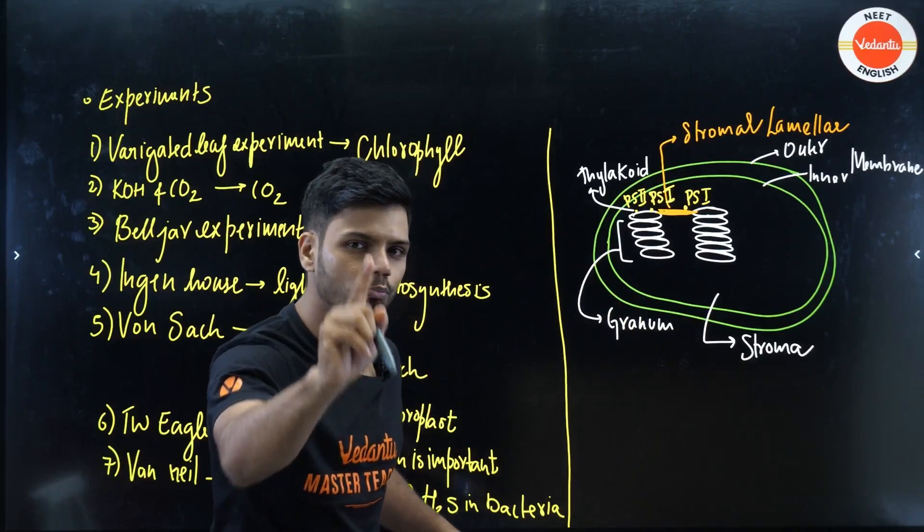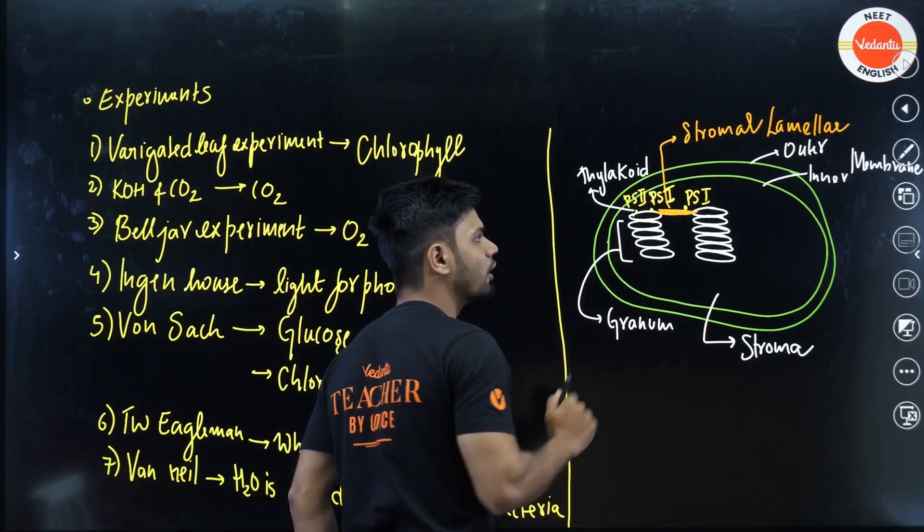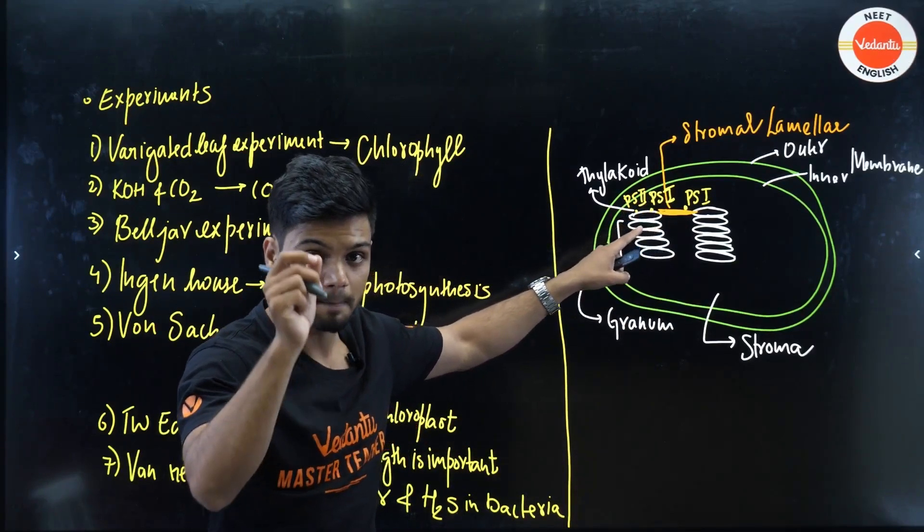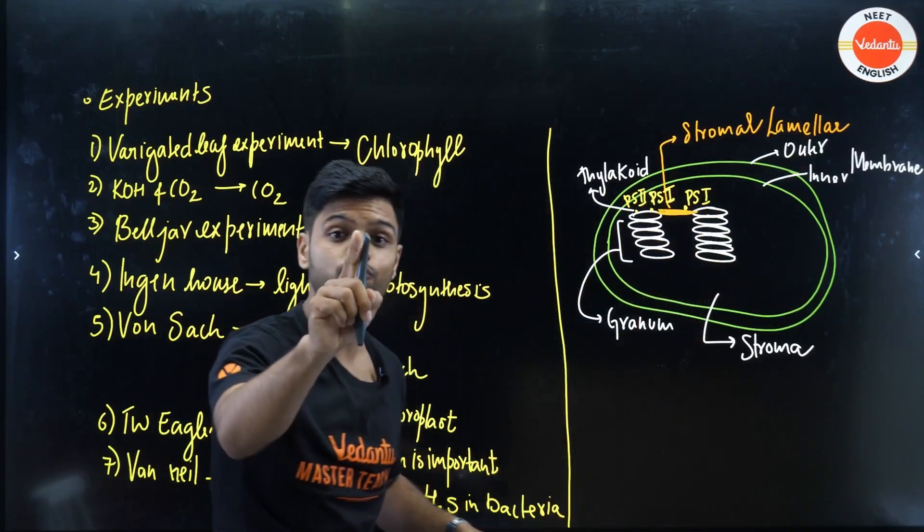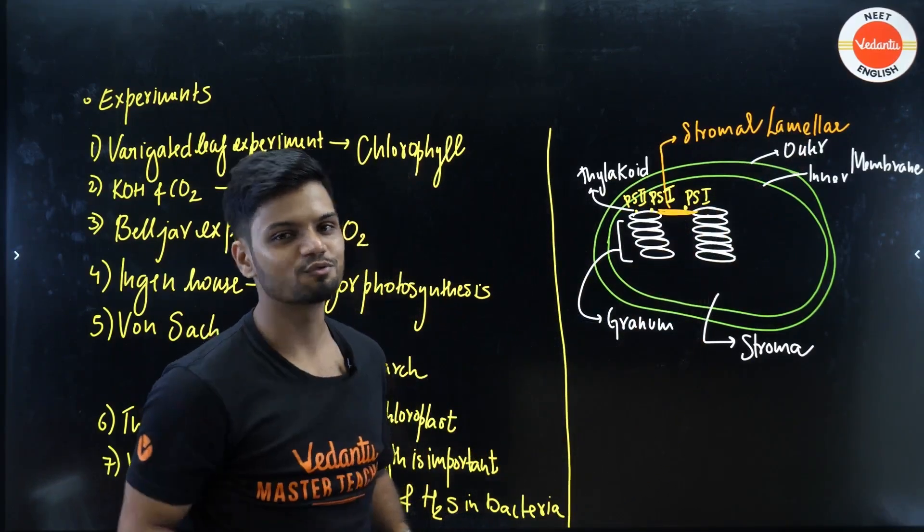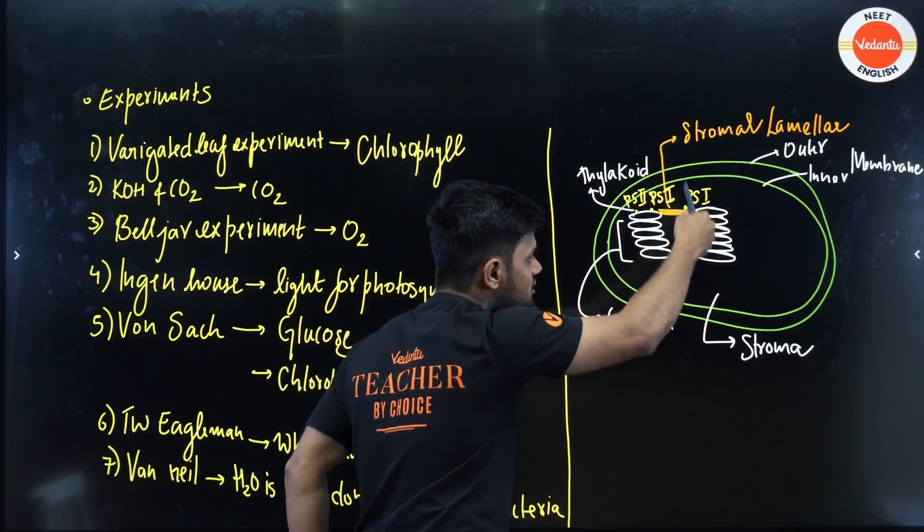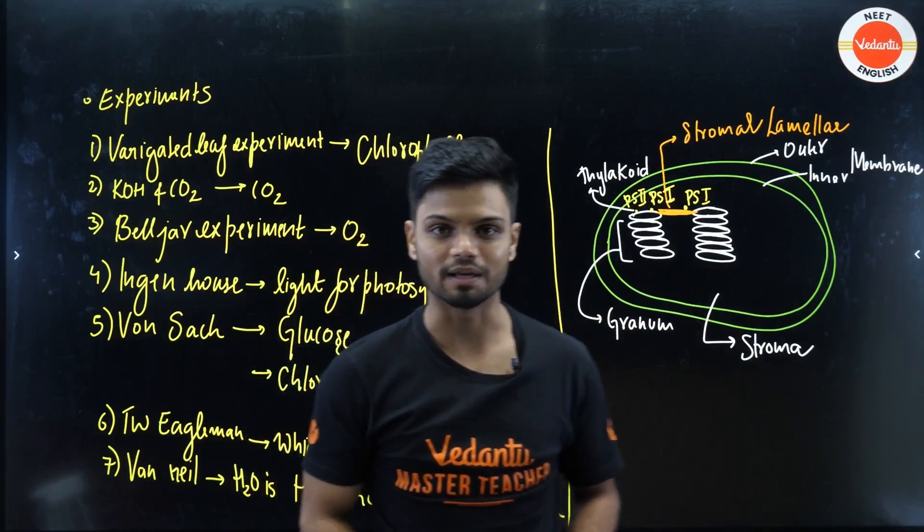Now, I want all of you to focus on two points here. On the thylakoid, we mainly have two photosystems. That is, photosystem 2 and photosystem 1. But on the stroma lamella, we only have photosystem 1. That is very important. Please note that on the thylakoid, light reaction takes place. And in the stroma, the dark reaction takes place.